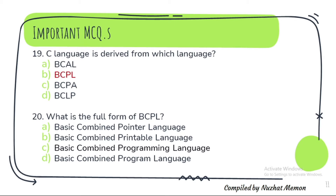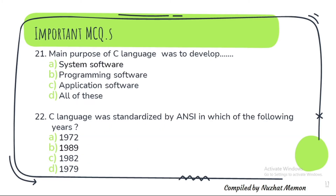What is the full form of BCPL? That is Basic Combined Programming Language. Question 21: The main purpose of C language was to develop system software. Question 22: C language was standardized by ANSI — the correct option is 1989. Question 23: What is the full form of ANSI? It is American National Standard Institute.